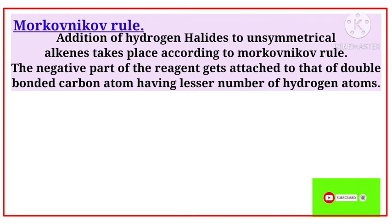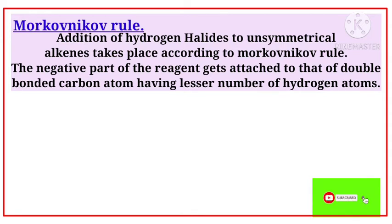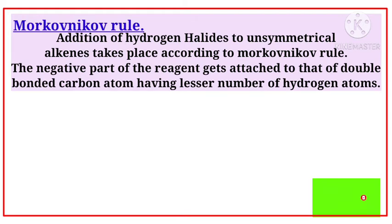Listen carefully: the negative part of the reagent — the reagent is hydrogen halide, so the halide is the negative part — gets attached to that double-bonded carbon atom having the lesser number of hydrogen atoms. For example, with bromine, the bromine attaches to the double bond at whichever carbon has fewer hydrogen atoms. This is Markovnikov rule.